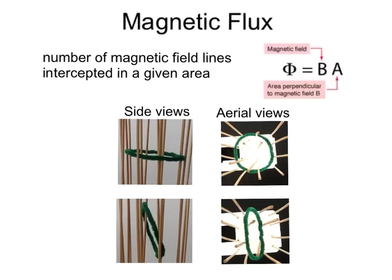Magnetic flux. This is the number of magnetic field lines intercepted in a given area. The symbol for magnetic flux is this funky phi symbol Φ. That equals the magnetic field strength times the area, Φ = BA. It is easy to understand when we look at the side view here.